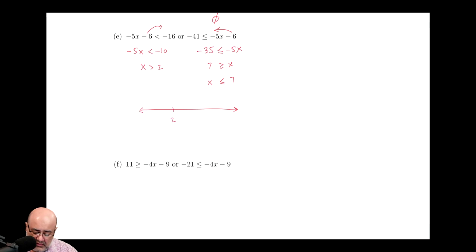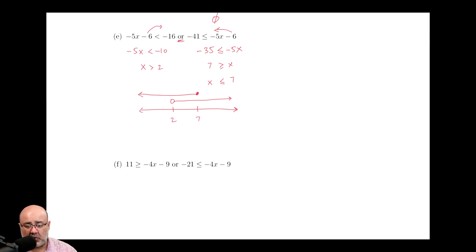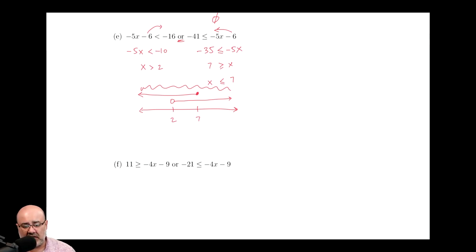So here, 2 and 7 on the number line: open circle at 2 going to the right, closed circle at 7 going to the left. This is an OR problem, so we're asking where are we covered from the rain. There's rain falling all over, and I'm covered everywhere — I have coverage of the entire number line, nothing is uncovered. So the solution in interval notation would be negative infinity to infinity.